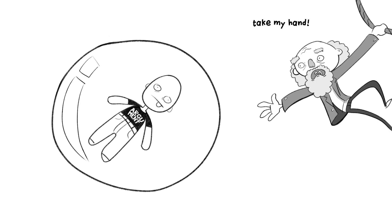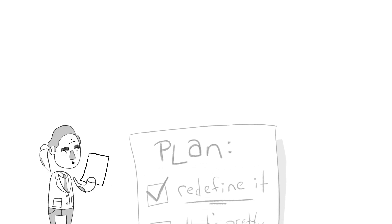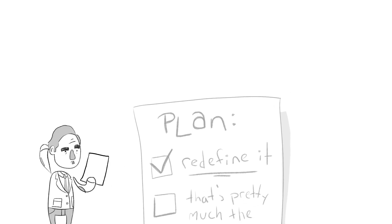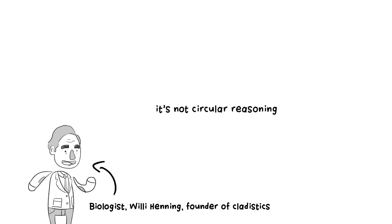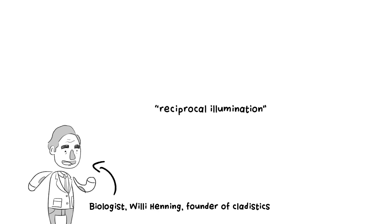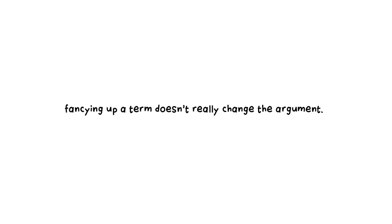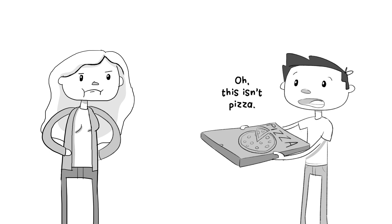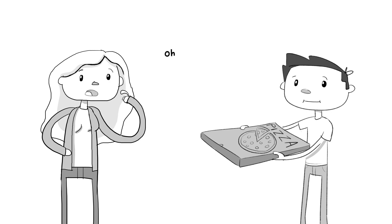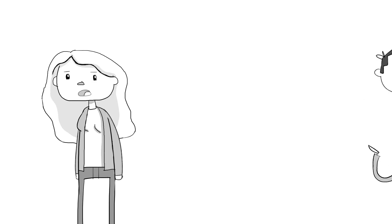So what are the options in trying to solve this problem and escape the vicious circularity? Seeing their success at redefining homology, some tried to redefine circular reasoning too — it's not circular reasoning, let's call it 'reciprocal illumination.' Fancying up a term doesn't really change the argument. Did you order a pizza? I told you I'm making meatloaf. 'Oh, this isn't pizza, it's an elliptical caloric transmission device.'